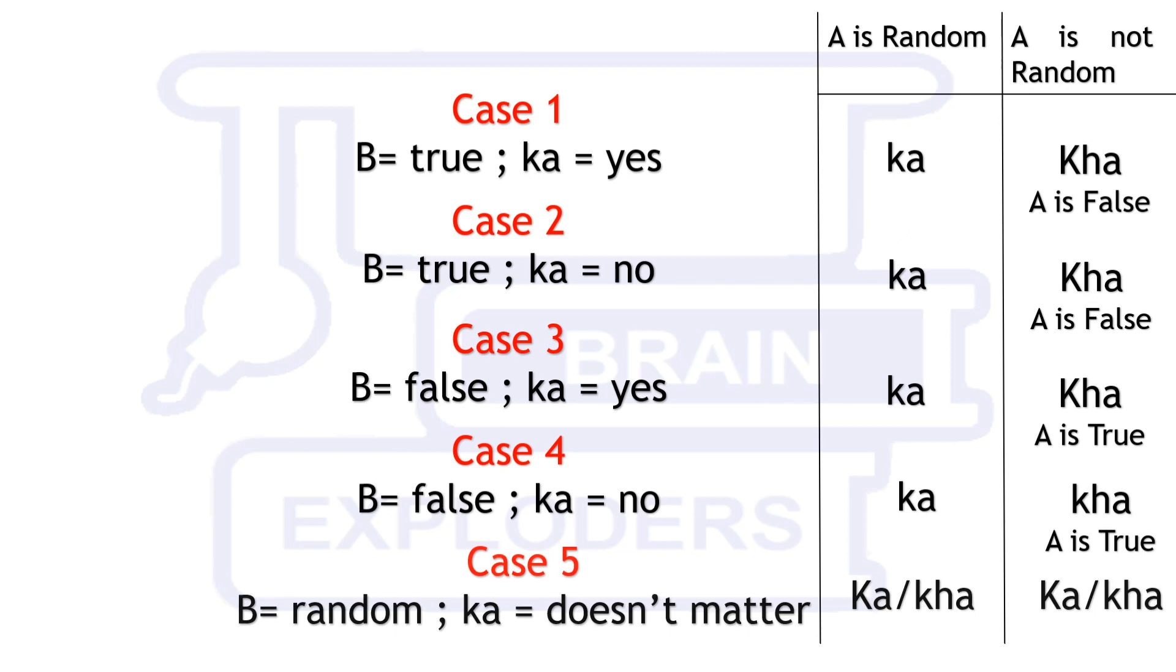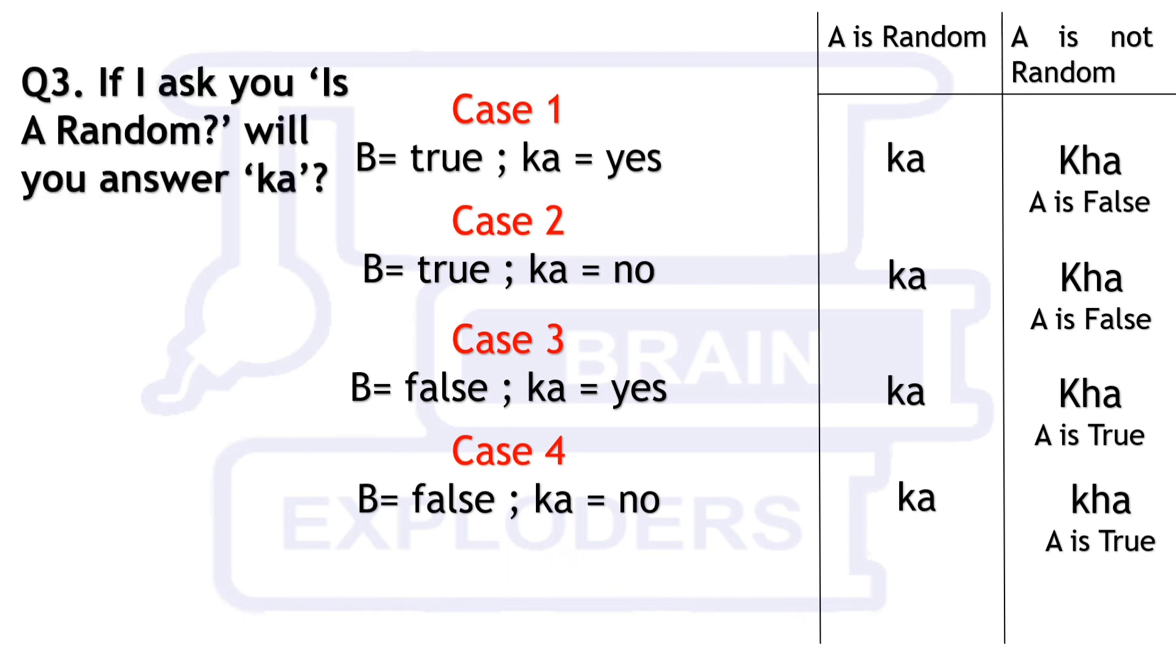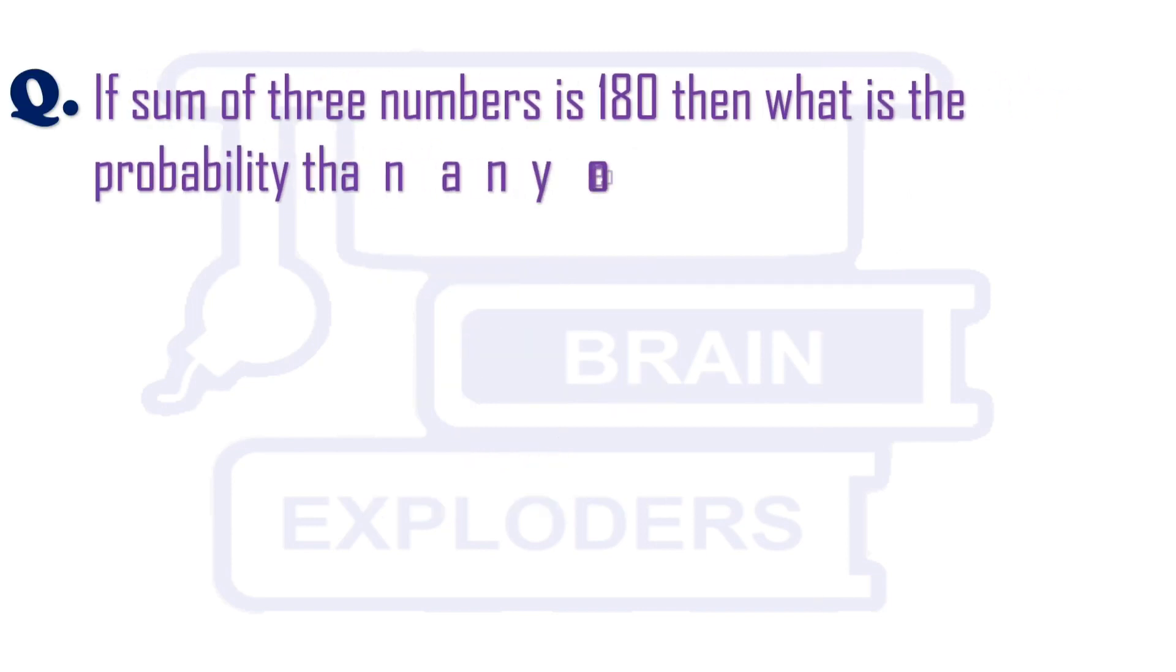This last reply will reveal the identities of all Gods. Let's move to our another question. If sum of three numbers is 180 then what is the probability that any one of them is greater than 90.